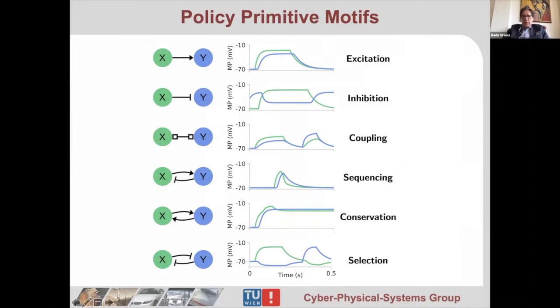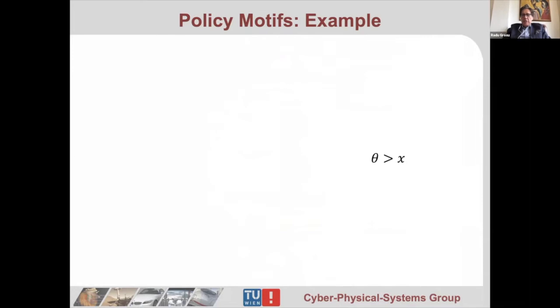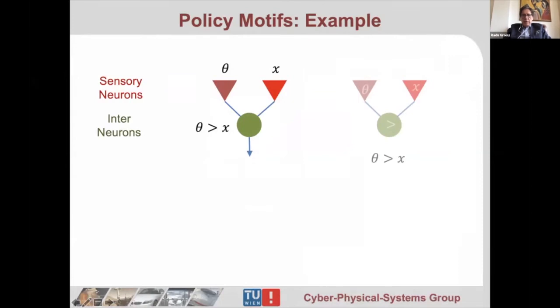Let me give you an example. Suppose you have an expression theta greater than x. In compilers, you might have learned that you create an abstract syntax tree for it where you have theta and x as the inputs and a comparator that says greater than or equal. How can you implement this with neurons? First, theta and x are sensory neurons. Then you have an interneuron which does the comparison.